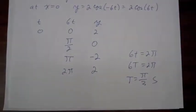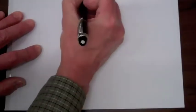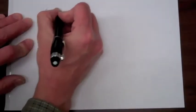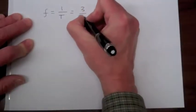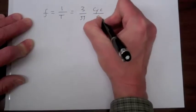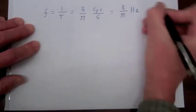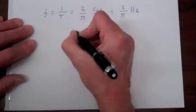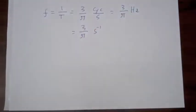That's the amount of time it takes to perform one cycle: π/3 seconds per cycle. The frequency of the wave is just 1 over the period, so that will be 3/π cycles per second. Cycles per second is often referred to as hertz, but we'll more often write it as 3/π inverse seconds.